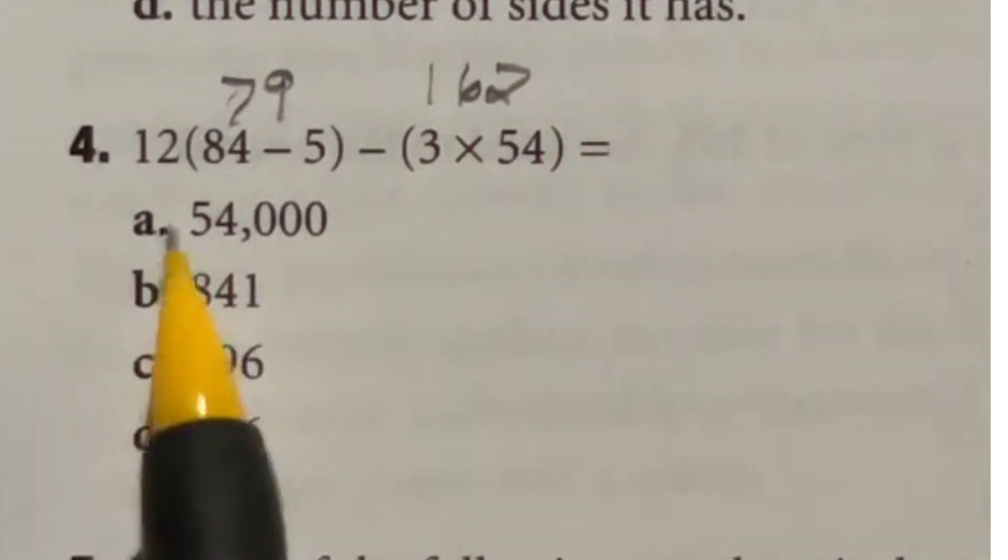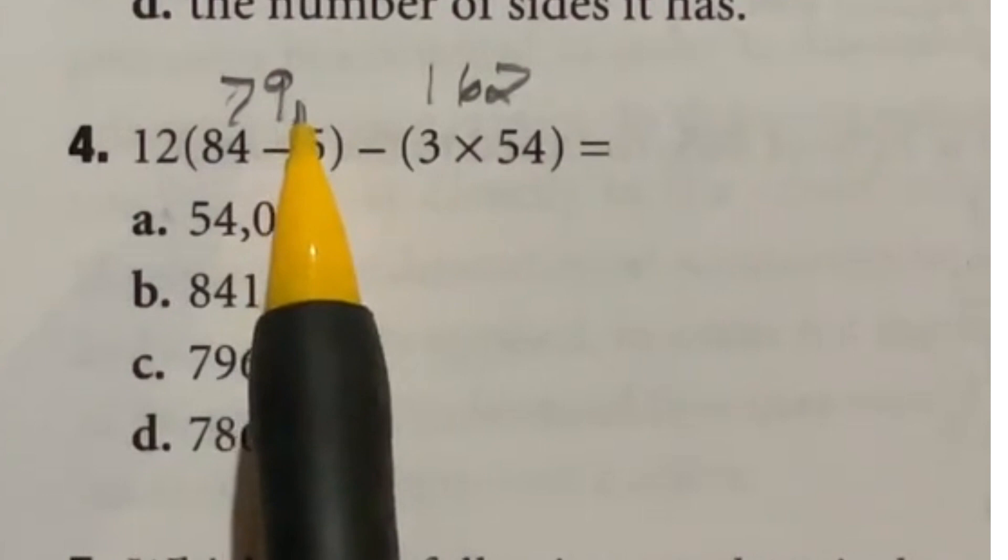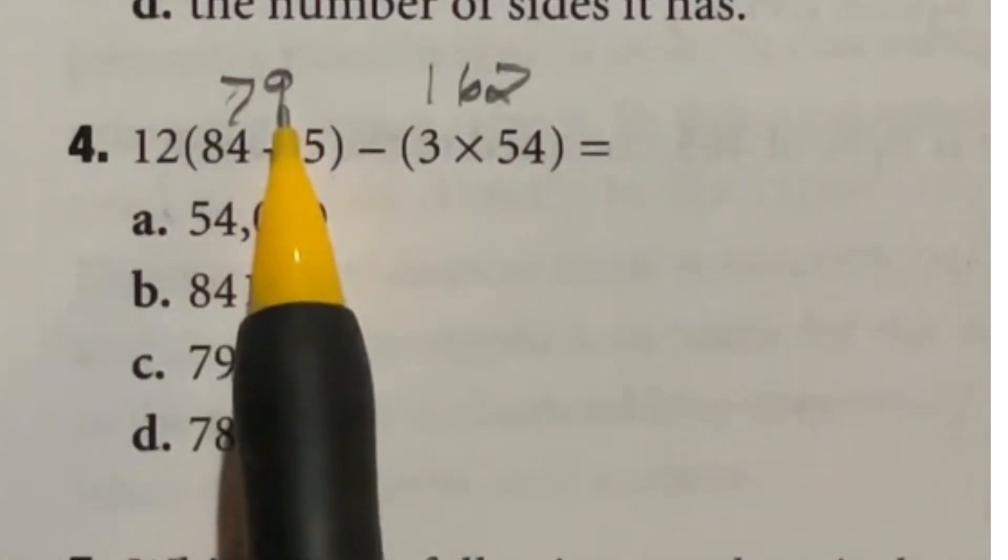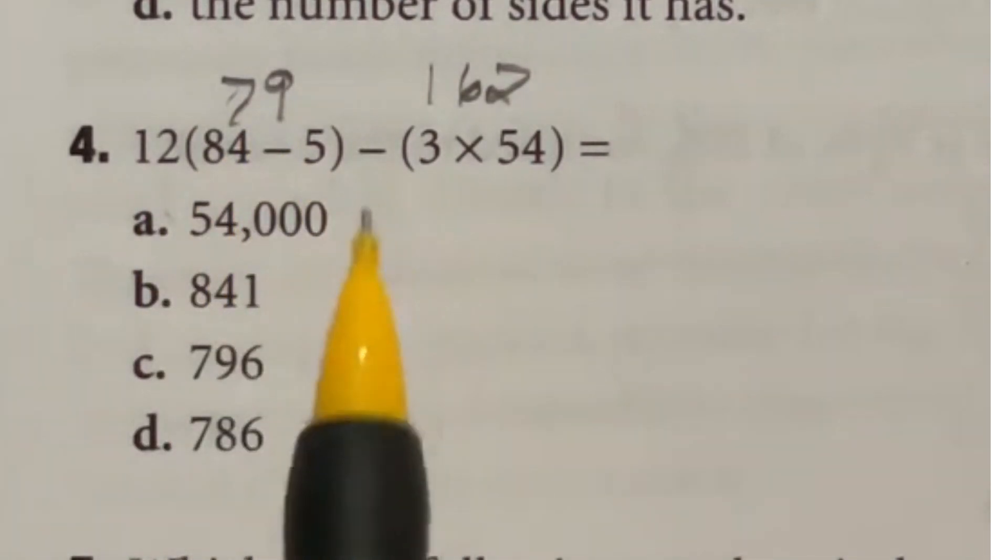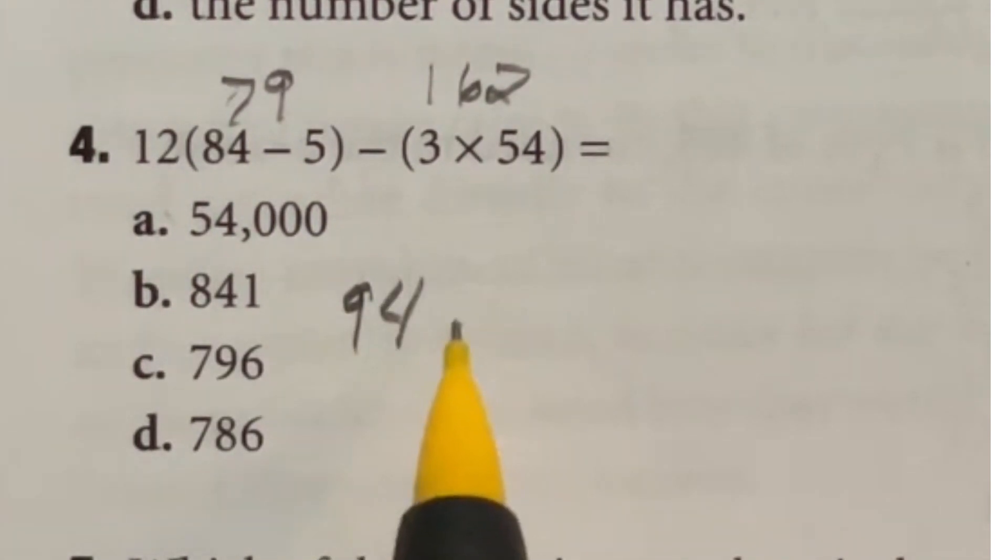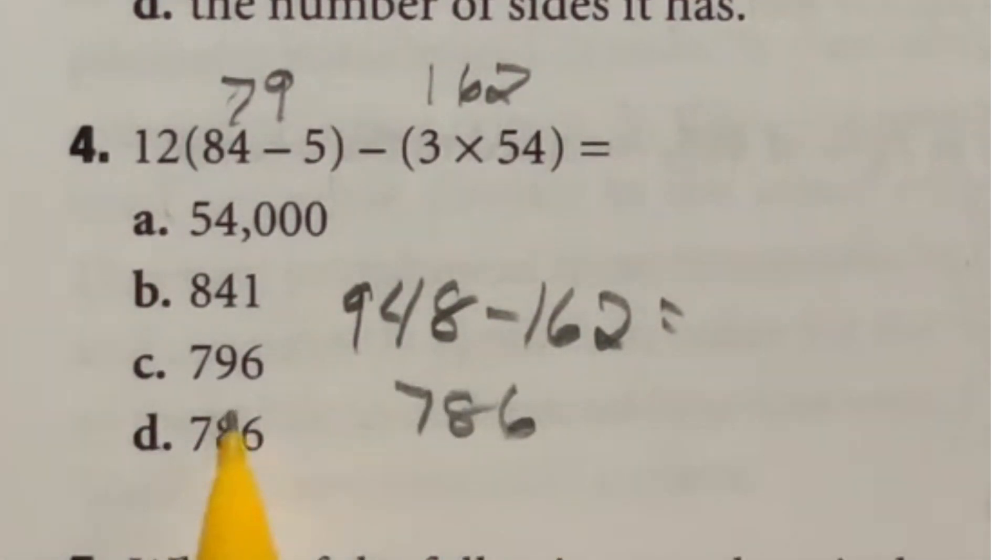Now the 12 times 79 is going to be a bit more. But the way I'm going to think of this is 10 times 79 is 790, and then you just got to add two more 79's onto there giving us a total of 948. So we have 948 minus this 162. And when we do that out, it's going to give us a final answer of 786, which is answer D.